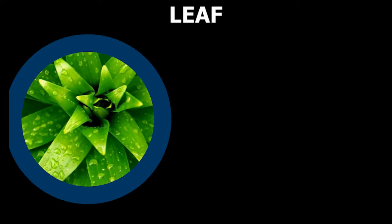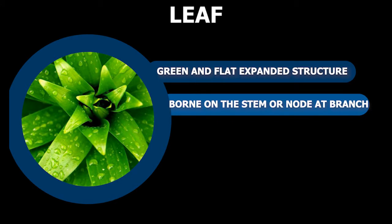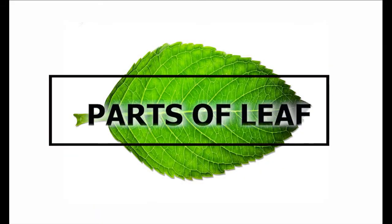The leaf is a green, flat expanded structure born on the stem or branch at the node. It has different parts which perform different functions. Let's see these different parts.